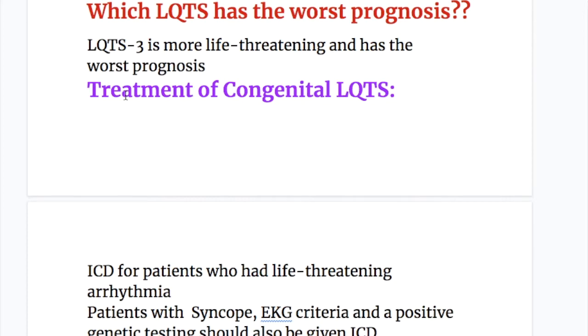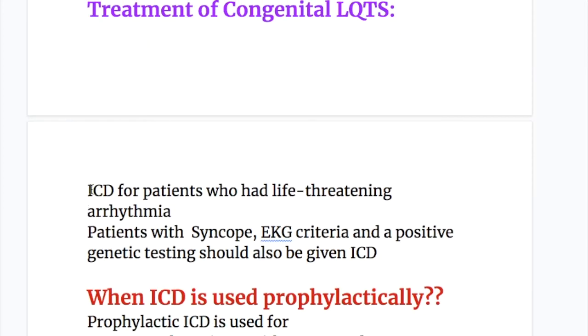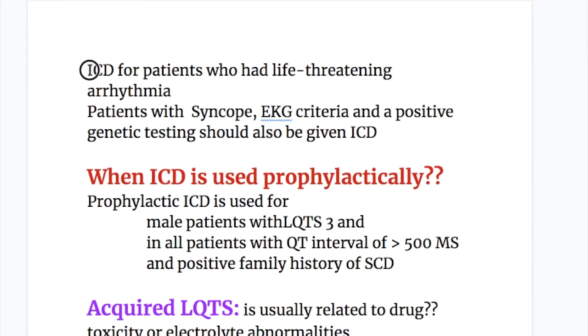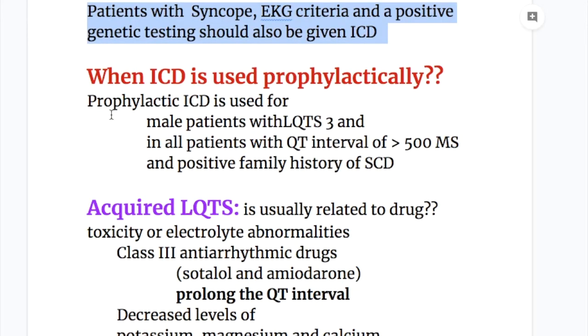Now treatment of the congenital LQTS. Symptomatic treatment is with beta blockers, as I already told, and actual treatment is ICD, implantable cardioverter defibrillator, for patients who have had life-threatening arrhythmia. And patients with syncope, EKG criteria and a positive genetic testing should also be given ICD. When is ICD used prophylactically? Prophylactic ICD is used for male patients with LQTS 3 and in all patients with QT intervals of more than 500 milliseconds and a positive family history of sudden cardiac death.